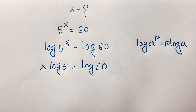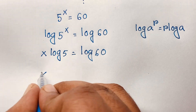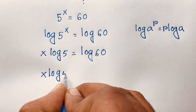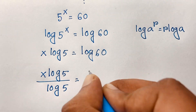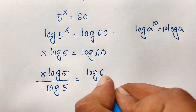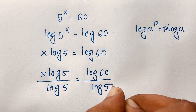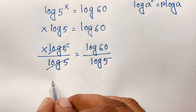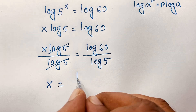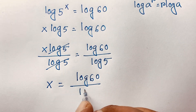At this moment, I divide both sides by log 5. So I can see this expression: x log 5 divided by log 5 is equal to log 60 divided by log 5. You can see the log 5 terms cancel out. We find out x is equal to log 60 divided by log 5.